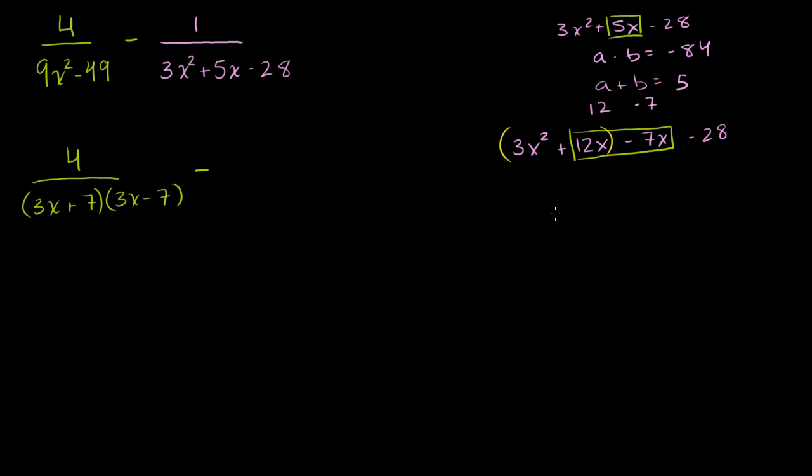If we factor out a 3x here, this first expression is the same thing as 3x times x plus 4. And then the second expression, let's factor out a negative 7, so minus 7 times x plus 4. And lucky for us, we have a common factor of x plus 4. So if you factor out the x plus 4, you get x plus 4 times 3x minus 7.